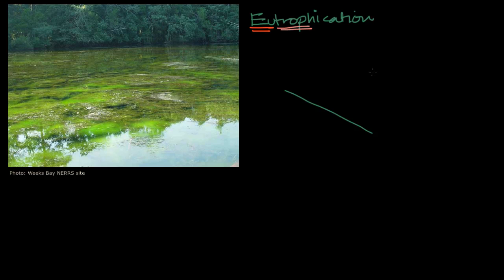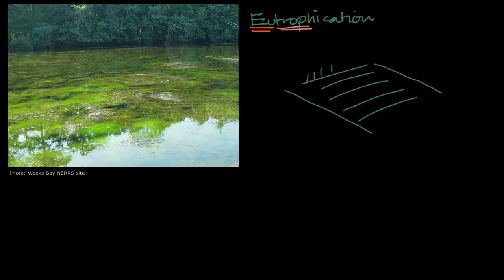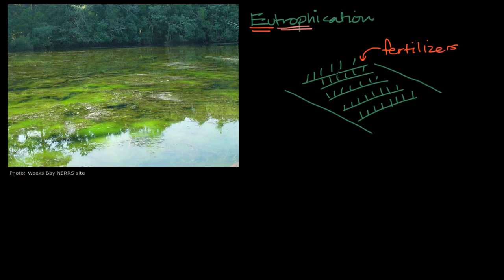So let's say that this right over here is some land, and this is a farm where we're growing our crops. In order to ensure that the crops grow as much as they can, we add fertilizer — a lot of that fertilizer might be nitrogen or phosphorus in the form of phosphates. The biggest culprit tends to be phosphates, and adding them helps the plants grow more, which seems like a good thing.